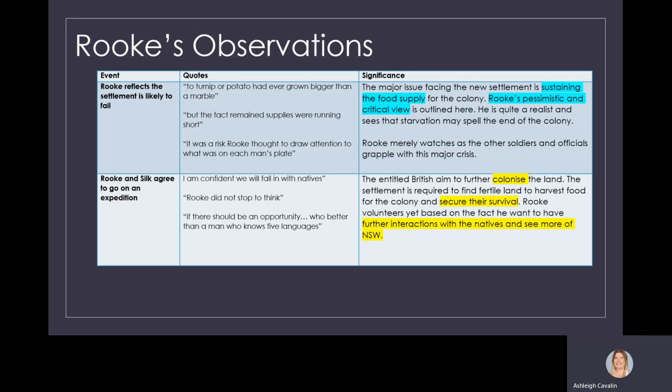What happens next? Rook and Silk agree to go on an expedition. The entitled British aim to further colonise the land. However, they still have to find fertile land to begin harvesting food for the colony to make sure that they can survive. Rook volunteers to go on an expedition to look for this fertile land and potentially see some of the natives as well. Rook only signs up because he believes he can get something out of this: some form of education or new insights.